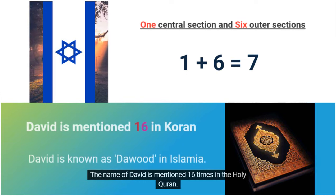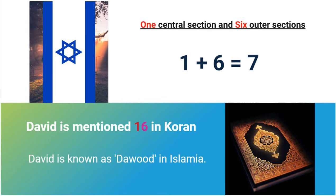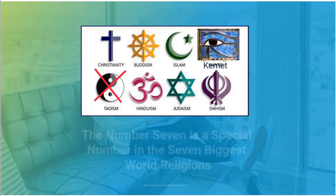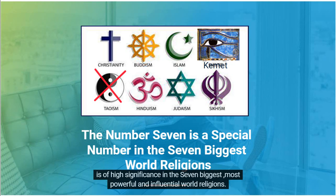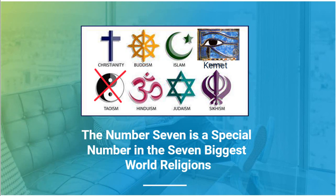The name of David is mentioned 16 times in the Holy Quran. Since seven is the chosen number according to the Star of David, let us explore how the number seven is of high significance in the seven biggest, most powerful and influential world religions.